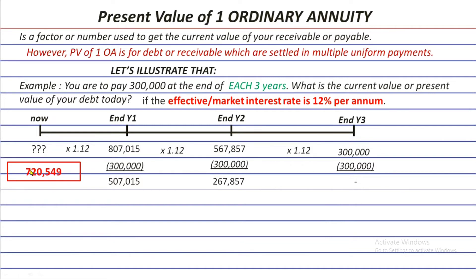According to this analysis, you need to pay 300,000 three times to settle the debt. This is the timeline technique for getting the present value. Even without knowing the present value ordinary annuity, you can use this technique or the present value of one discussed in the past episode — treating each 300,000 payment as a separate debt. So for the first year: 300,000 times (1 + i) raised to the power of negative n.